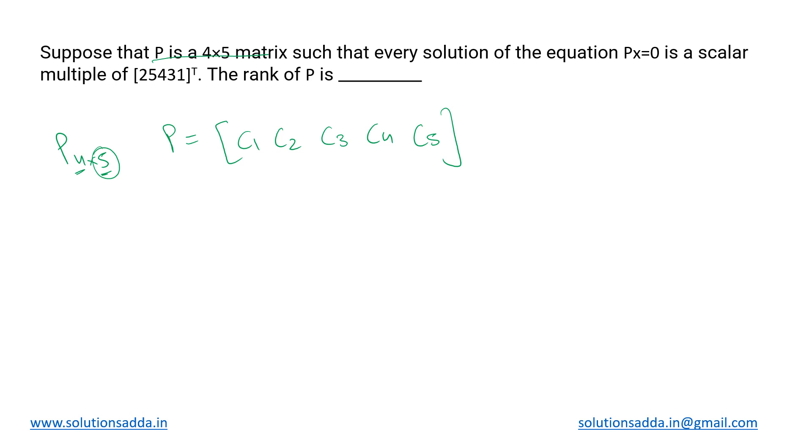Now, what they have given is Px = 0. We wrote P as a matrix consisting of 5 column vectors, and x is another matrix such that their product equals 0. The solution for this equation becomes a scalar multiple of the given matrix.